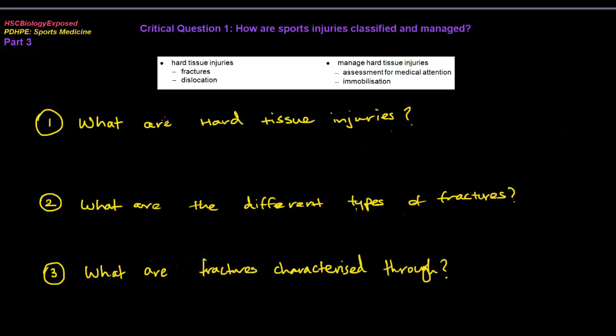Hey everyone, today I'm going to be talking about critical question 1: how sports injuries are classified and managed. This is part 3 of the part 4 series and today we'll be looking at hard tissue injuries as well as how to manage these hard tissue injuries. So I've laid out a series of questions which are quite simple and cover the syllabus content. First thing we're going to be looking at is fractures and dislocations, and then we're going to be moving on to the assessment for medical attention as well as immobilization.